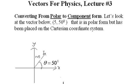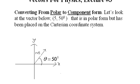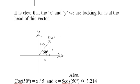That is, the length of this vector is 5 units and it is at an angle of 50 degrees from the initial side of the x-axis. It is clear that the x and y we are looking for is at the head of this vector. So we are looking for this x and y in order to convert it to component form.